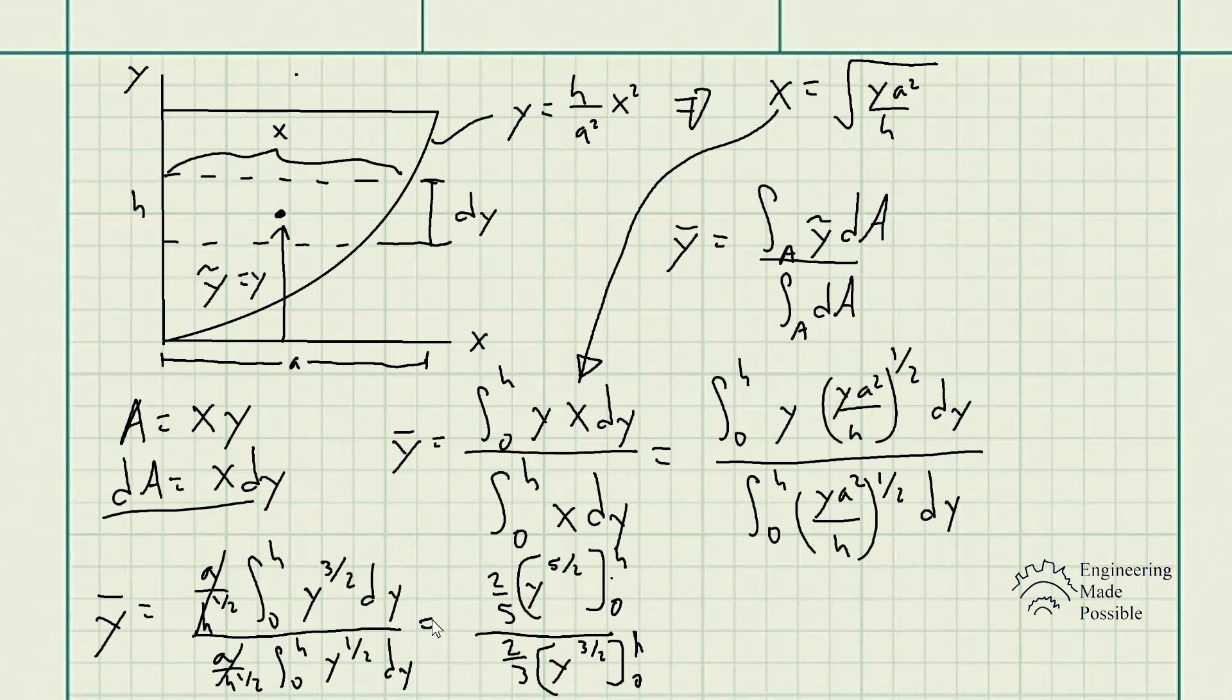So let's go ahead and solve. So we get 2 fifths times y to the 5 halves from 0 to h. And we have 2 thirds times y to the 3 halves from 0 to h. So let's solve. And we finally have 3 fifths h. And so this is our y-bar.